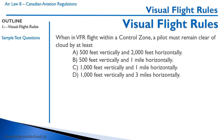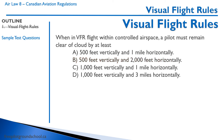VFR flight in a control zone — a pilot must remain clear of cloud by at least. Remember, a control zone has the greatest VFR weather minimum, so the correct answer is 500 feet vertically and one mile horizontally. Similarly, for controlled airspace generally, you must be clear of cloud by 500 feet vertically and one mile horizontally — the same as a control zone, but without the requirement to be 500 feet above the ground.